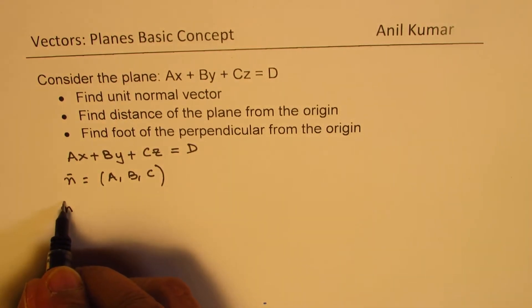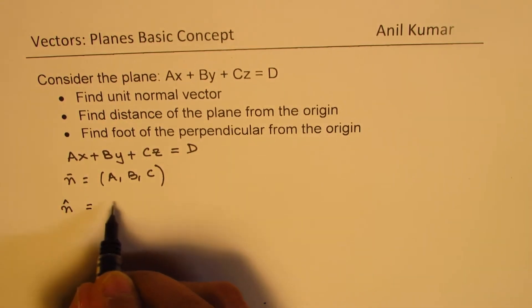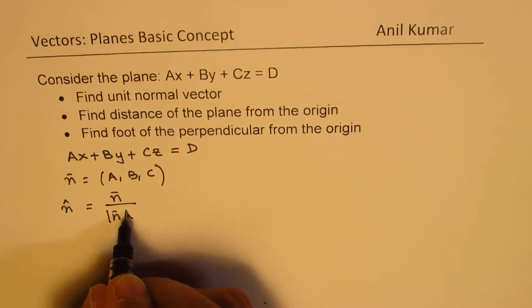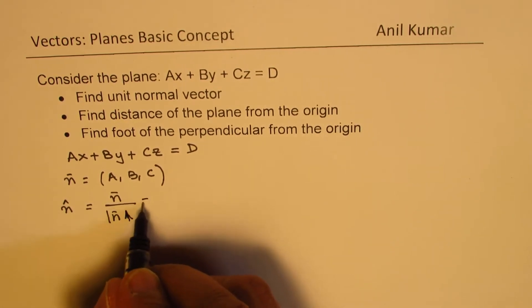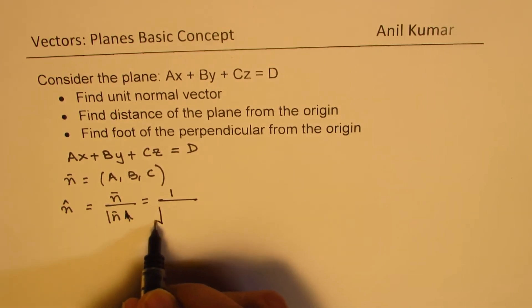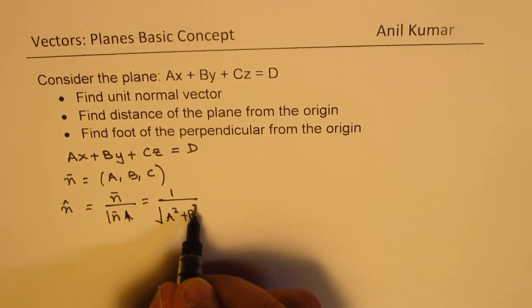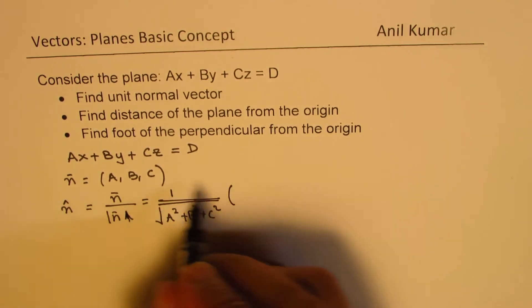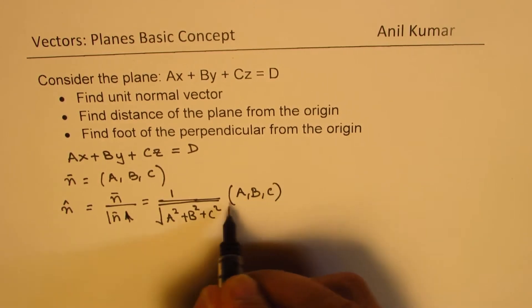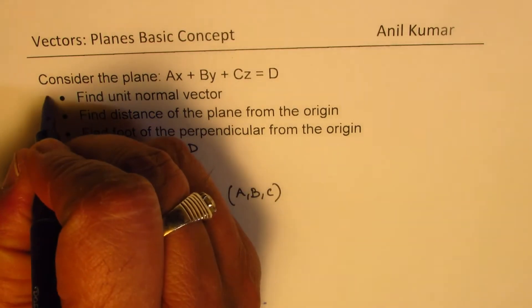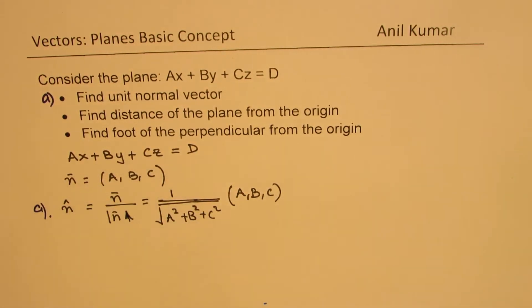The unit normal vector will be the normal vector divided by its magnitude. So in this case the unit normal vector is one over the square root of A squared plus B squared plus C squared, as a scalar multiple of (A, B, C). That becomes our unit normal vector — that is the solution for part A.